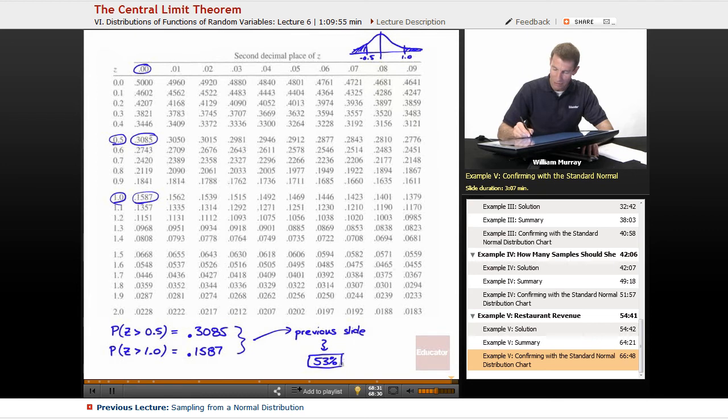And we worked through some calculations and we came up with a 53% probability that this restaurant is going to make between $725 and $800 in their nightly revenue. So that wraps up example 5. Everything here, well most of the work was done on the previous slide. You can go back and check it out. Just the two, the missing step on the previous slide was where these two numbers came from. The 0.3085 and the 0.1587.